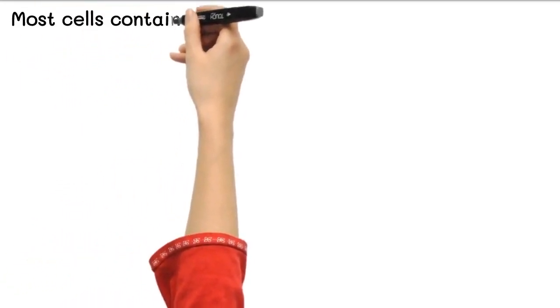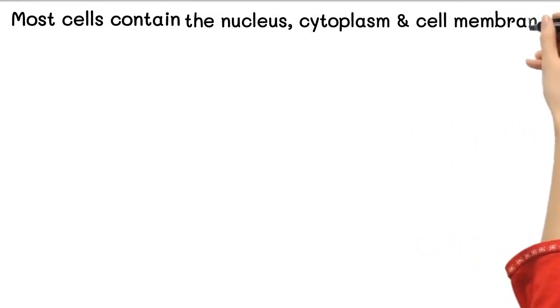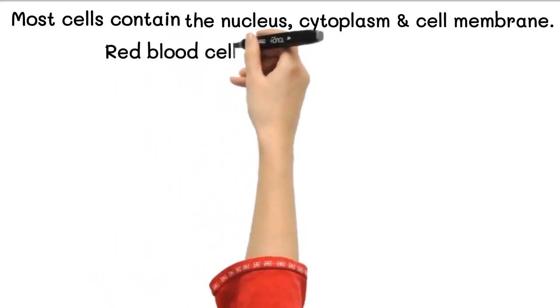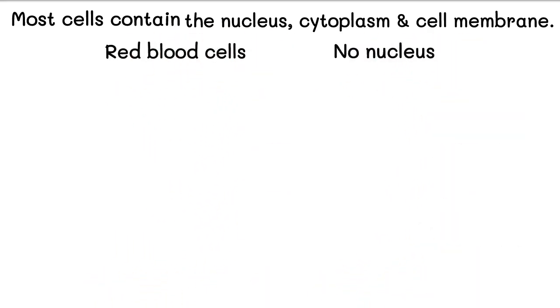Most cells contain certain parts such as the nucleus, cytoplasm, and cell membrane. Some cells have structures missing. For instance, red blood cells are unusual in that they have no nucleus.